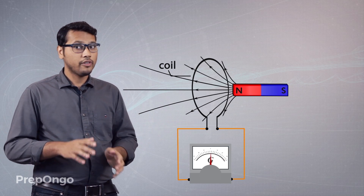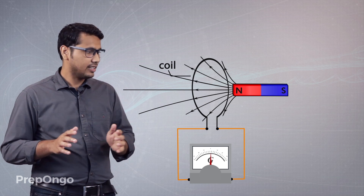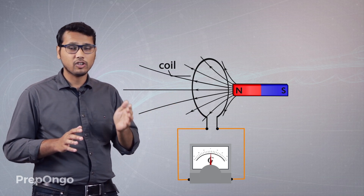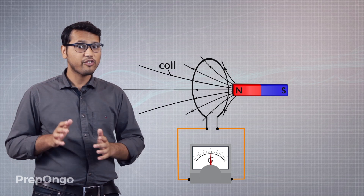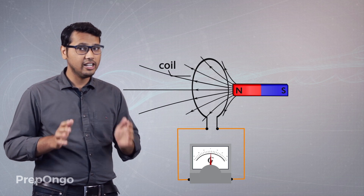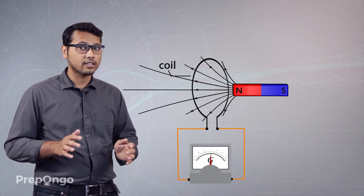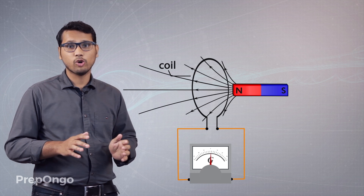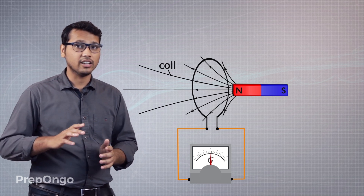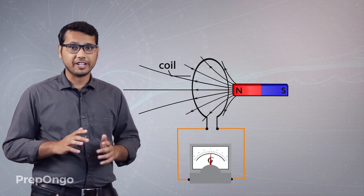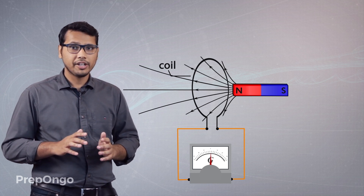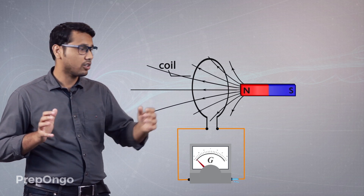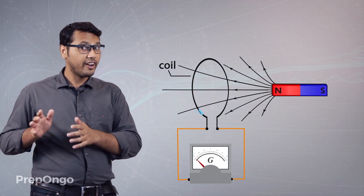When we are moving the magnet towards the coil, the number of magnetic field lines are increasing through the coil, so the galvanometer deflects in the left direction. Now if I take the magnet away from the coil, you will find that the galvanometer deflects in the right direction.